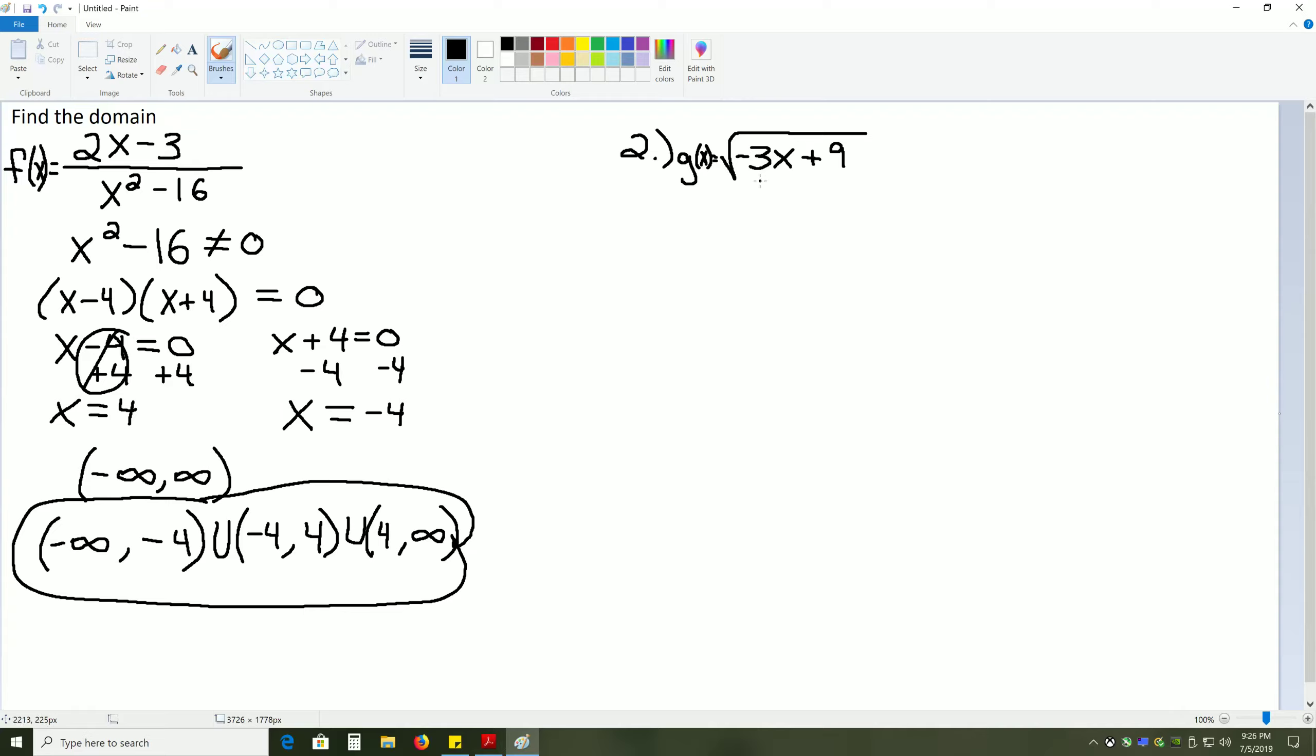When you're dealing with a square root rather than a fraction, whatever is inside the square root has to be positive or zero. You cannot take the square root of anything less than that, otherwise you get imaginary numbers. So, we're going to immediately take this negative 3x plus 9 and say that this has to be greater than or equal to zero. No matter what we do, negative 3x plus 9 has to be a positive number or zero.